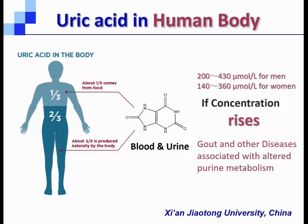If the concentration is higher than this range, it will cause diseases like gout and other diseases associated with purine metabolism. So for clinical reasons, for detection of disease, we need to detect uric acid in human blood.